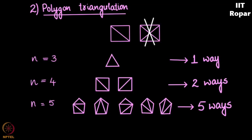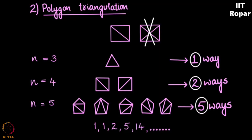So we get the sequence 1, 1, 2, 5, 14, and so on. This again gives the Catalan numbers.